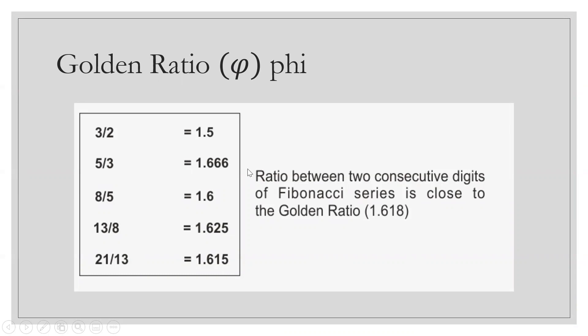It is also known as the divine proportion. It is actually taken from the Fibonacci sequence: 1, 1, 2, 3, 5, 8, 13, 21, and so on and so forth. What is the idea of the golden ratio?